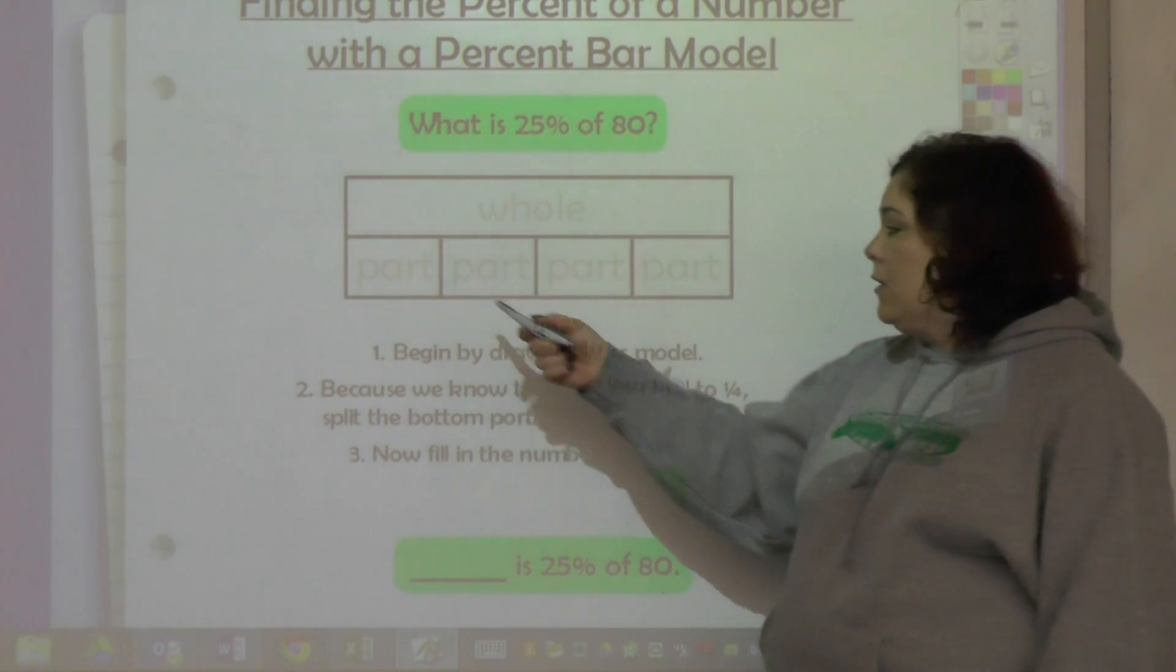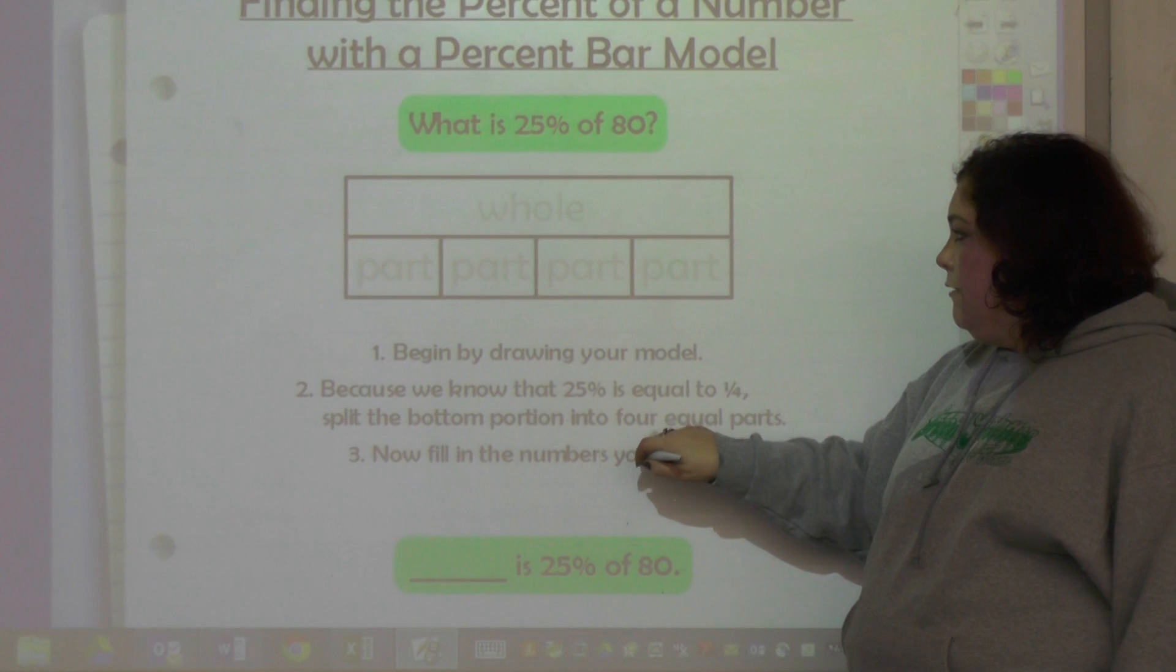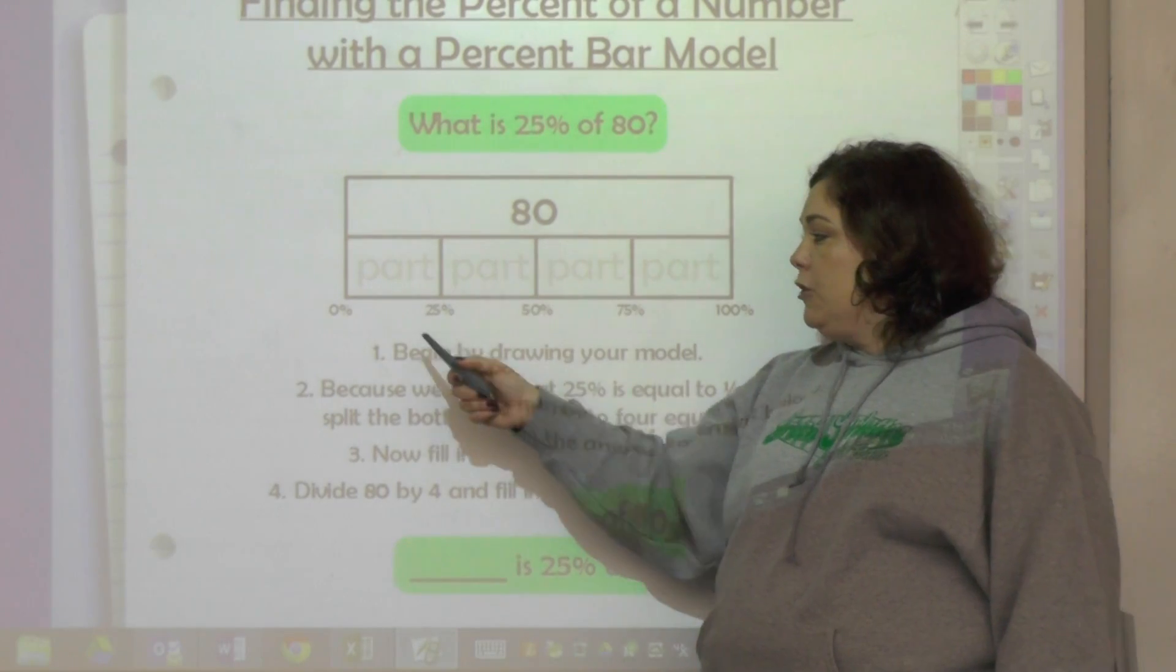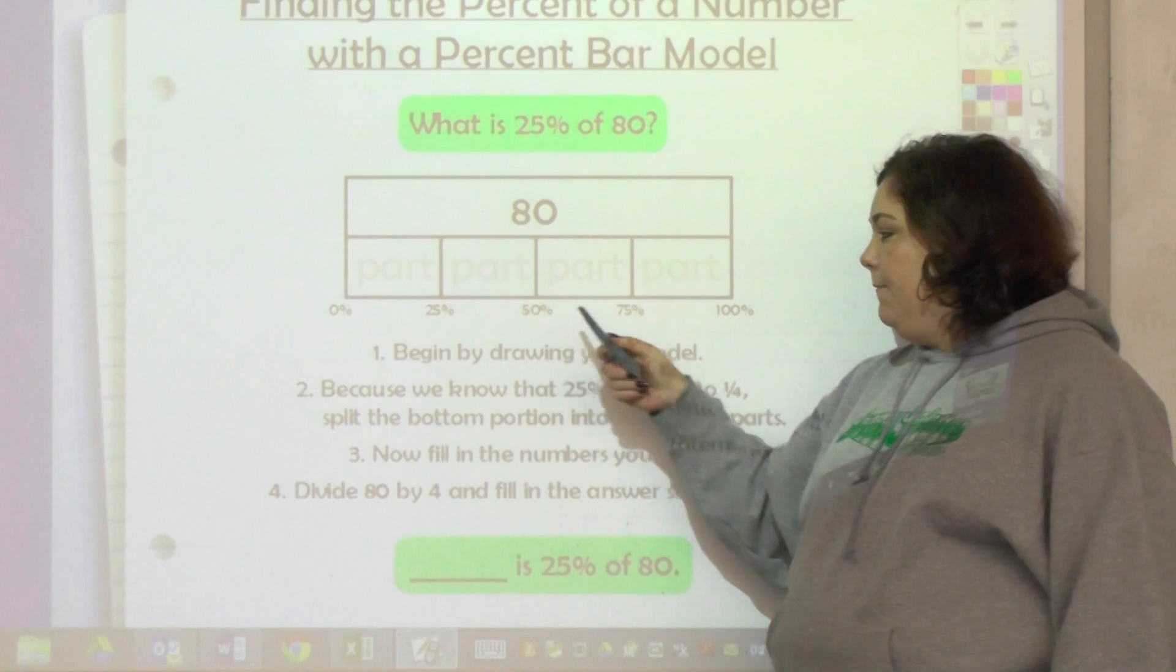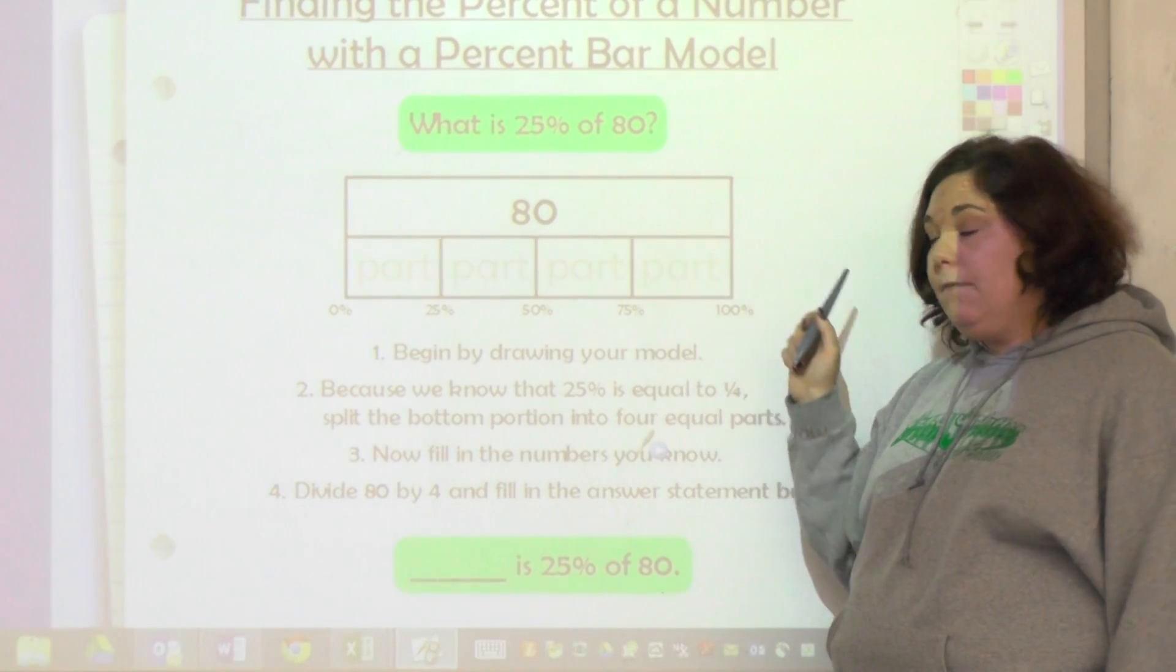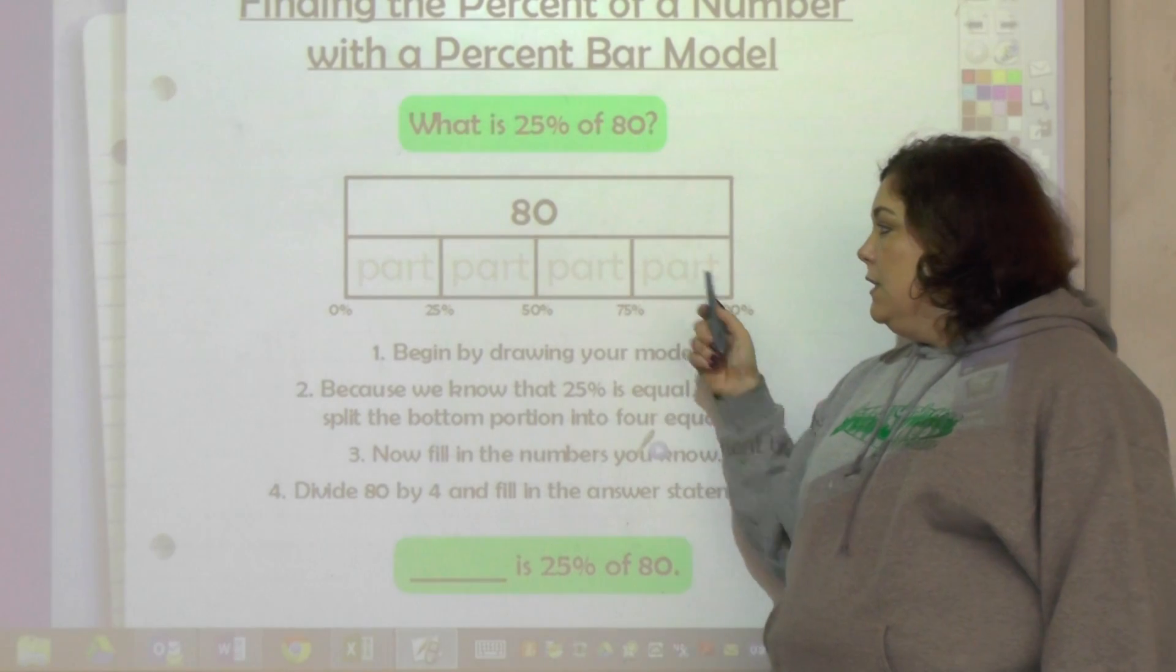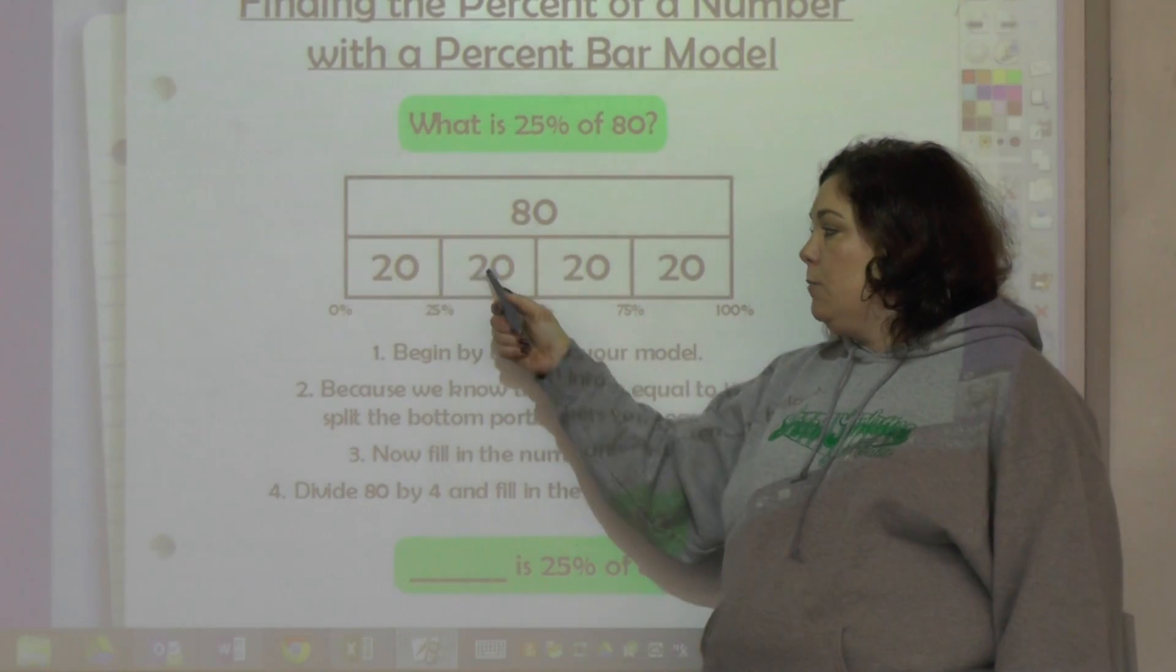Then you would fill in the numbers that you know. Well, you know 80, and then you put your percents across the bottom: zero percent, 25%, 50%, 75%, 100%. You're counting by 25, and that's the fourths that you have. Now you would divide 80 into four parts, so whenever you do that, you would get 20 for each part.